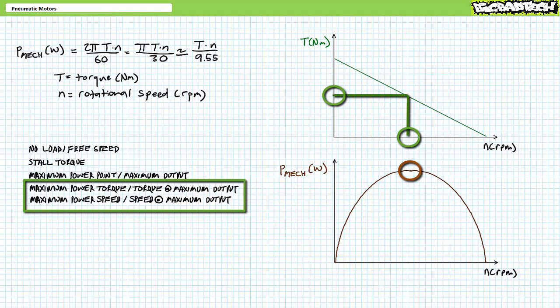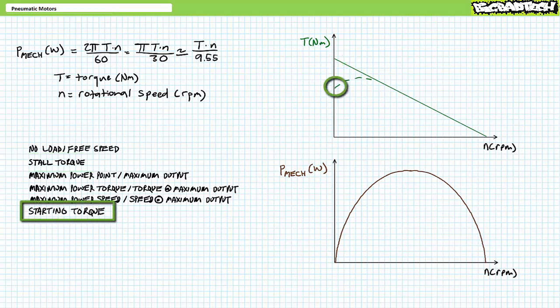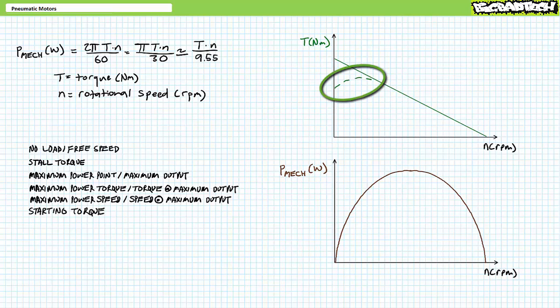Maximum power point is characterized by maximum power torque and maximum power speed, alternatively called torque at maximum output or speed at maximum output depending upon manufacturer. Stall torque is different than starting torque: stall torque occurs to a running motor that is brought to rest, whereas starting torque is the maximum torque produced by a motor to initiate rotation from rest. Due to the necessity of breaking static inertia, starting torque is less than stall torque. Starting torque is often illustrated on a speed-torque curve using a supplementary torque curve, which looks like a little hill on the left-hand side.